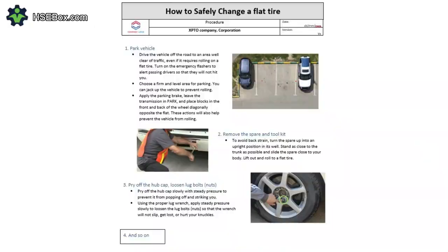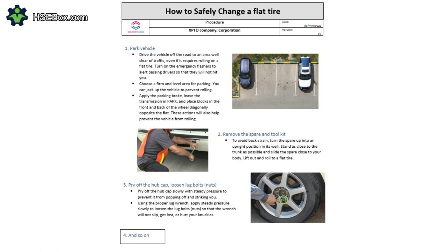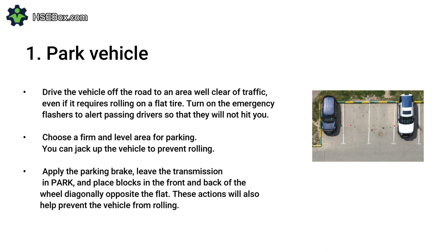For example, the work procedure based on the partial JSA developed in this video might start like this. 1. Park vehicle: drive the vehicle off the road to an area well clear of traffic, even if it requires rolling on a flat tire. Turn on the emergency flashers to alert passing drivers. 2. Choose a firm and level area for parking so you can jack up the vehicle to prevent rolling. 3. Apply the parking brake, leave the transmission in park, and place blocks in front and back of the wheel diagonally opposite the flat to help prevent the vehicle from rolling. 2. Remove the spare and tool kit: to avoid back strain, turn the spare up into an upright position in its well, stand as close to the trunk as possible, slide the spare close to your body, then lift out and roll to the flat tire.